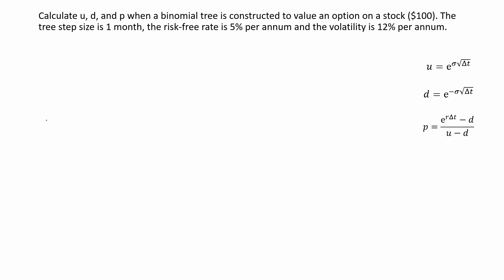Normally we start with the current value of the stock in the binomial tree, so in this case it's $100. Then we go up or down.